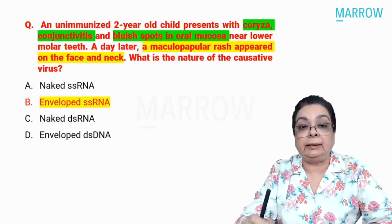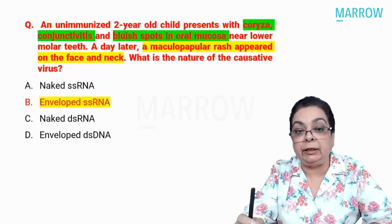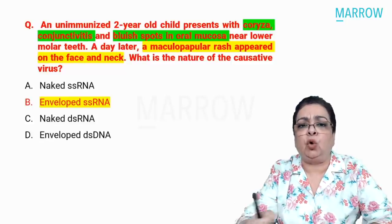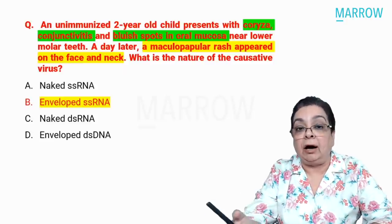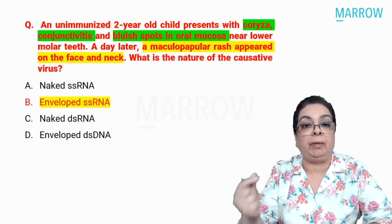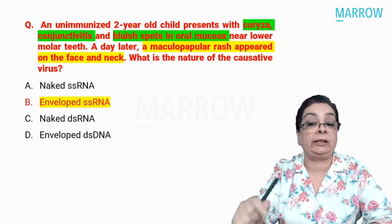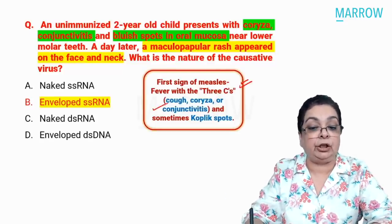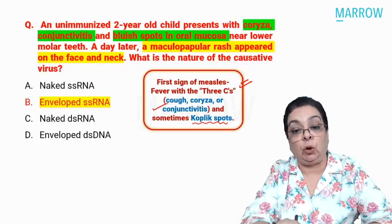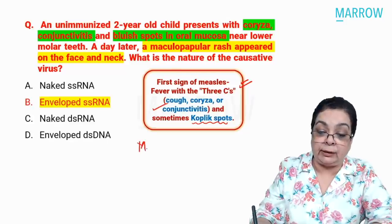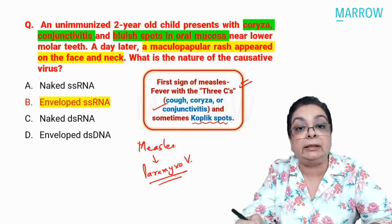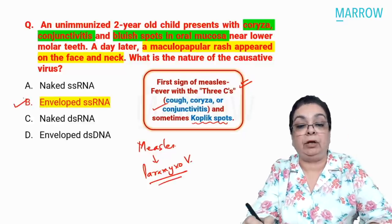Putting the symptoms together — coryza, conjunctivitis with bluish spots in the oral mucosa near the lower molar teeth — these are Koplik's spots, hinting at the diagnosis of measles, seen in the prodromal stage. After two to three days of the prodrome, the patient gets a typical maculopapular rash starting from the ear and forehead, spreading to the rest of the body. These are the three C's of measles: cough, coryza, and conjunctivitis in the prodrome, possibly associated with Koplik's spots. Measles belongs to paramyxoviruses, which are enveloped single-stranded RNA viruses.